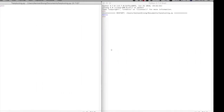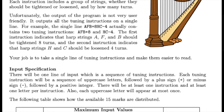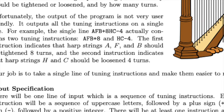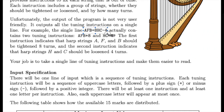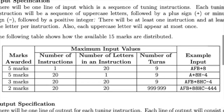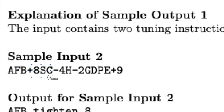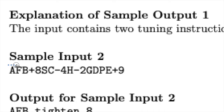Our job is to separate 'AFB+8' from 'HC-4'. We have to detect when there's a new instruction. A break occurs whenever a number is followed by a letter — so between 8 and H, between 4 and H, between 2 and G, and so on. That's where we'll split.